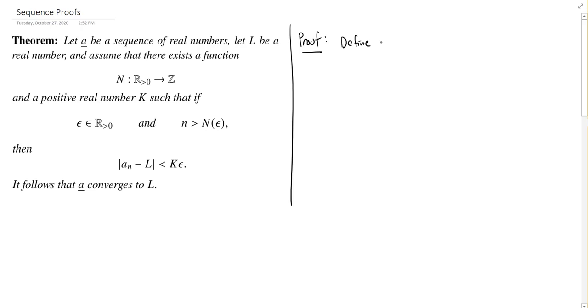So we're going to define a function. And I'm just going to call this, well, we used N over here. So maybe we'll call it M. Just some other letter. So M is going to be a function from the positive reals to the integers such that, well, actually, I don't need to tell you what the such that is.